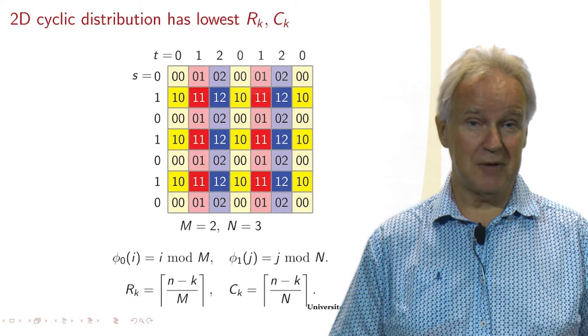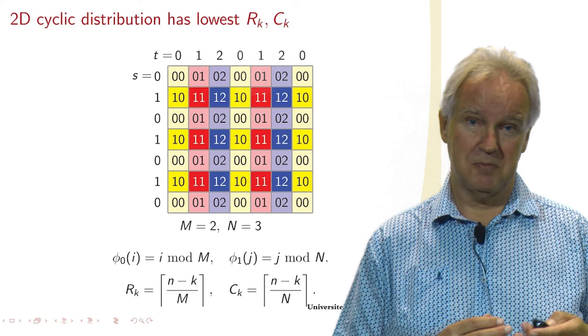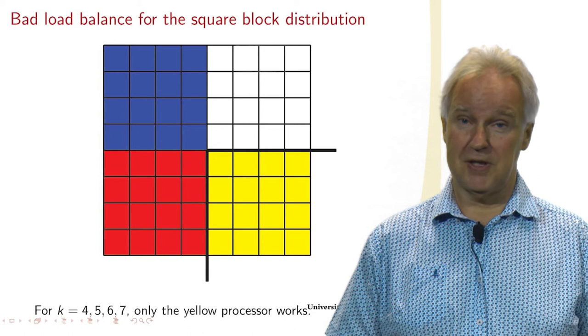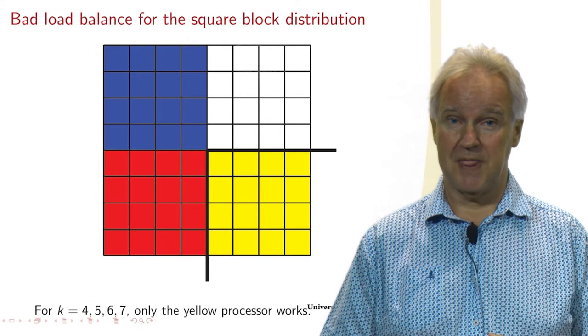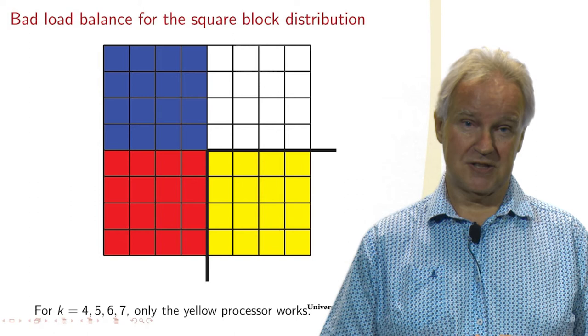So that's why we want to use that as a data distribution - so not only Cartesian, but also cyclic. Here you see this distribution, which is a block distribution, not a cyclic distribution. And you see that during the algorithm, the part of the matrix that is active becomes smaller.